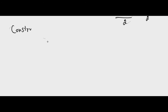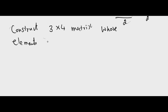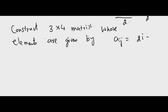Construct a 3 by 4 matrix whose elements are given by Aij equal to 2i minus j. We solve this the same way as the previous problem.